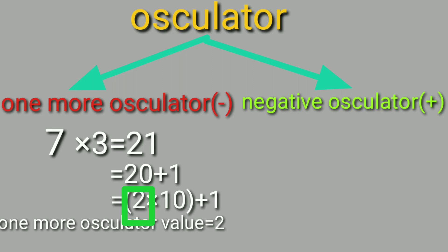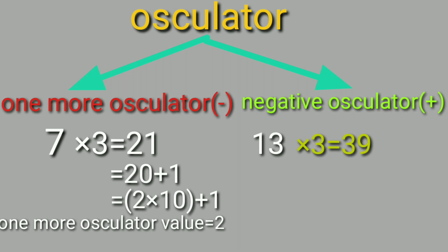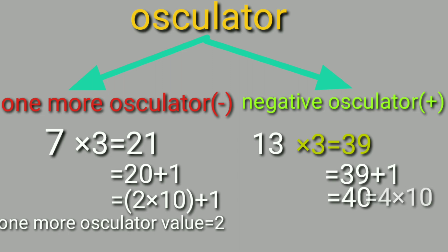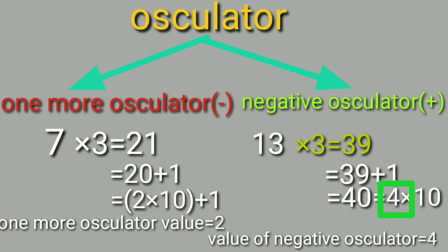The value is 2. Now for the negative oscillator — example: 13. The 10 multiple near 13 is 39, and 40 minus 1 equals 39. So 40 is 4 into 10 times. Negative oscillator value is 4. Negative oscillator means minus.